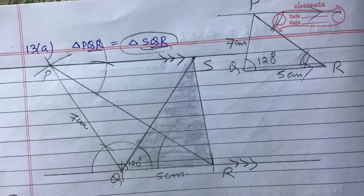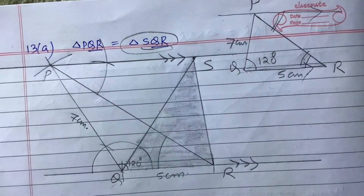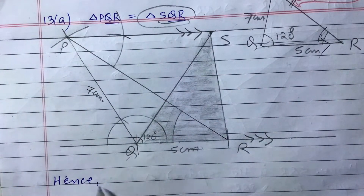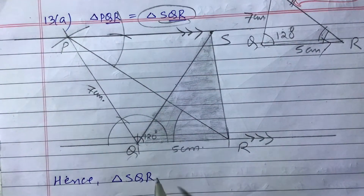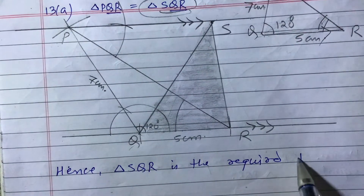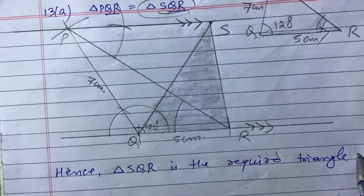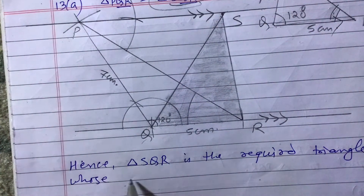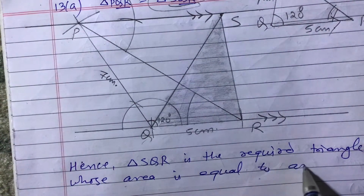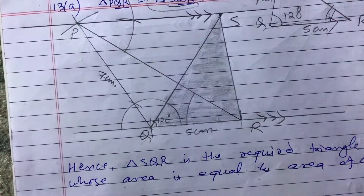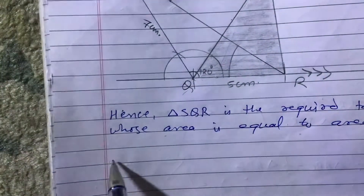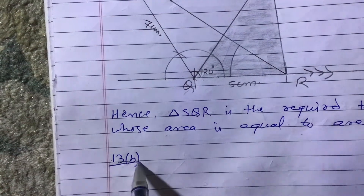Hence, triangle SQR is the required triangle whose area is equal to the area of triangle PQR. Now we will move to question number 13b.